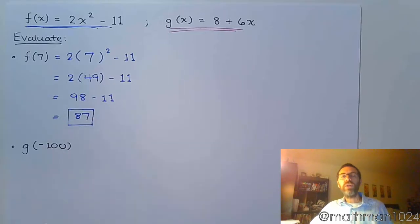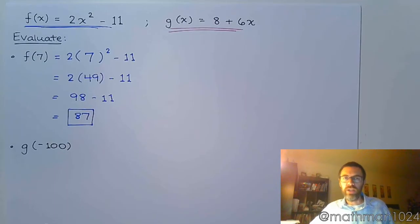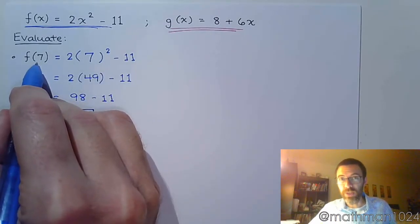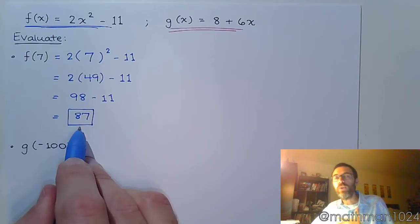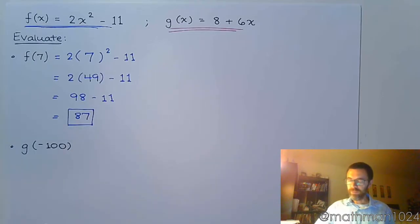And then 98 minus 11 is 87. And that's it. We need to understand that you are not solving anything. You are plugging in a number and you're evaluating. You're simplifying. There's no solving. You don't, at the end, say x equals anything. This was x. This was your input value. 87 is your output value, and that corresponds to the y-coordinate if you were to plot this.